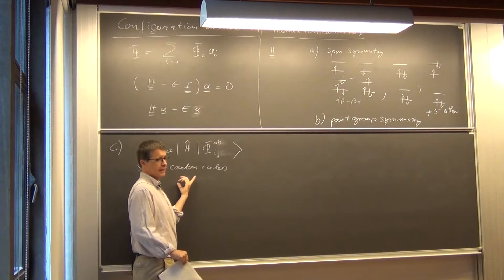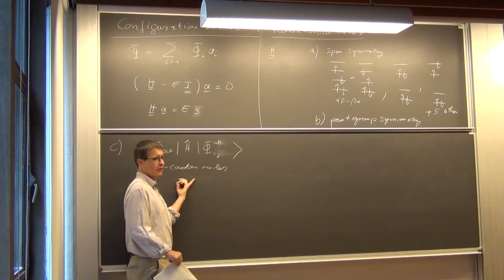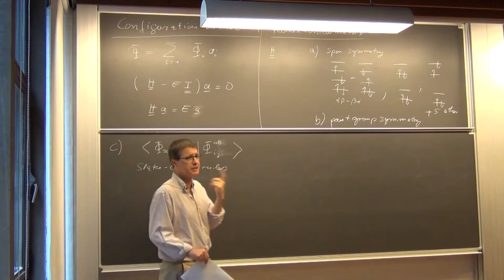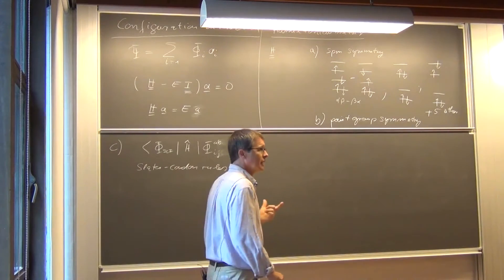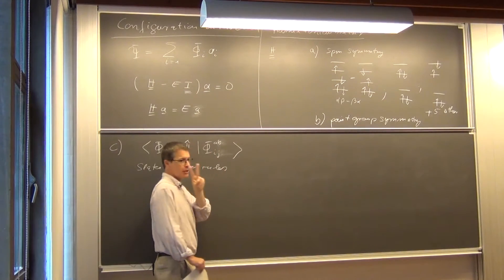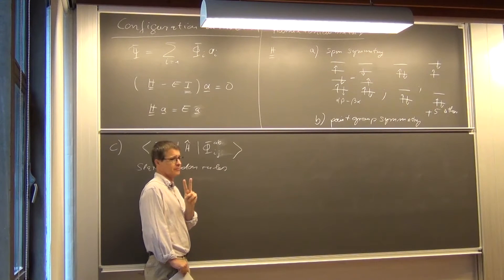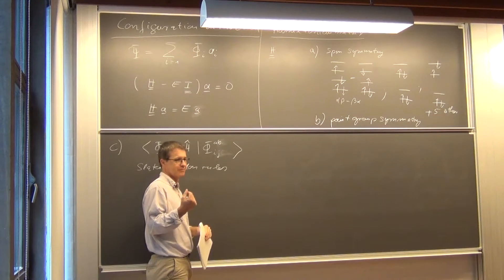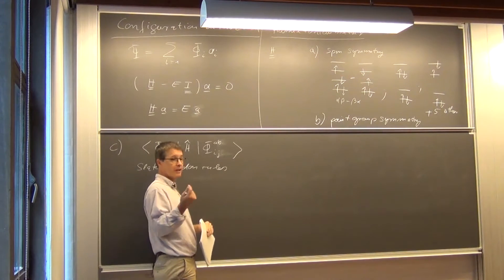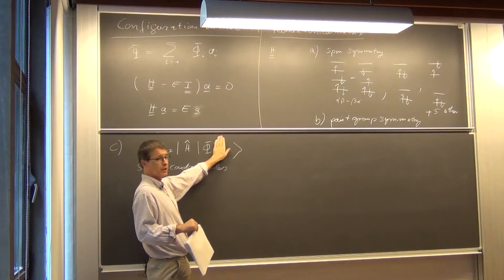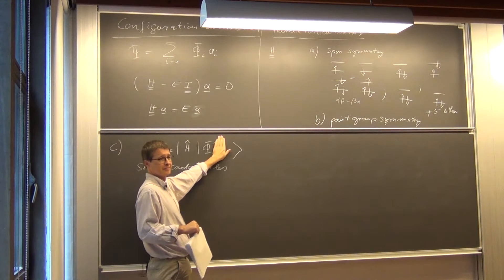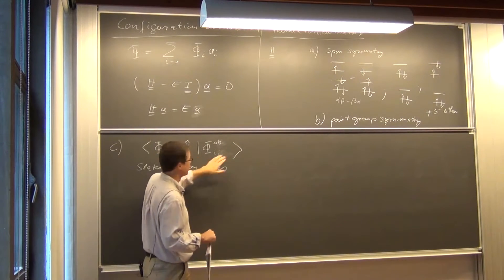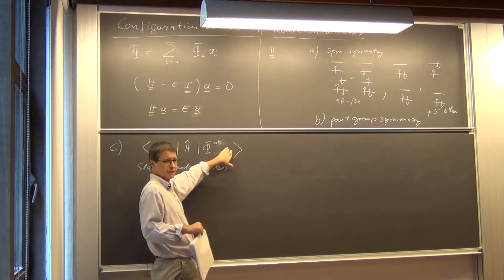And the Slater-Condon rules then say that in order for a matrix element over the Hamiltonian between two determinants to be different from zero, they are only allowed to differ in two orbitals. And the two orbitals is because there is a two-electron operator in the Hamiltonian. If you only would have one electron operator, then they are only allowed to differ in one.